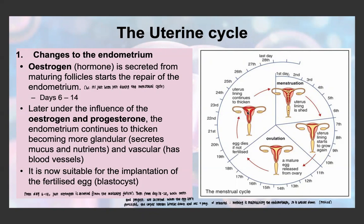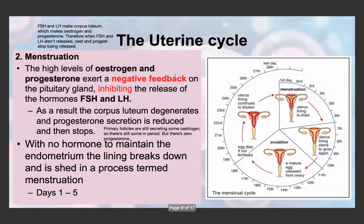Both estrogen and progesterone work together to continue thickening the endometrium. The egg will either become fertilized and implant itself in the endometrium where it can obtain nutrients and blood supply, or if the egg is not fertilized, the corpus luteum will degenerate, nothing will maintain the endometrium, it will shed, and menstruation will start all over again. It's a continuous cycle until fertilization occurs.